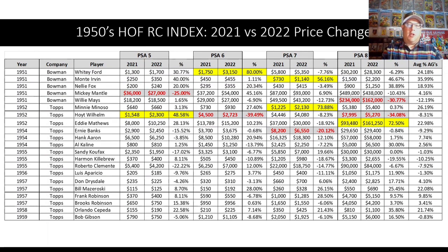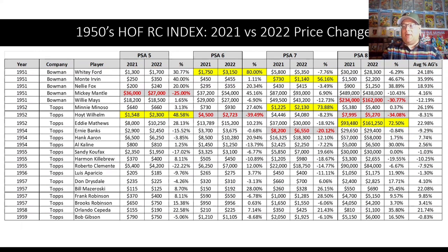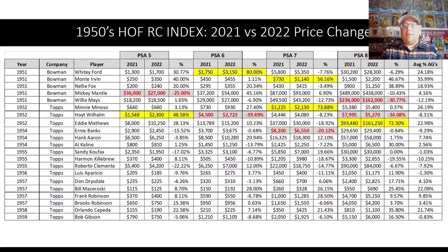Cards that went way down: surprisingly, the PSA 5 Mickey Mantle Bowman rookie card. The 52 Topps PSA 6 Hoyt Wilhelm — so the 5 went way up, the 6 went way down, which doesn't make a lot of sense, but we'll talk about some of this. The Ernie Banks PSA 7, the PSA 8s of Hoyt Wilhelm and Willie Mays went down by quite a bit, over 30%.